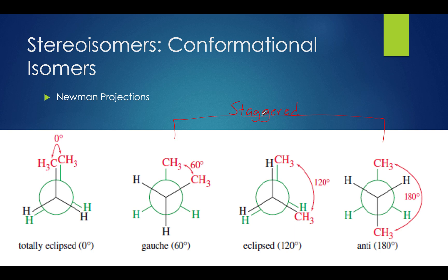Staggered groups are more energetically favored compared to their overlap counterparts, which are called eclipsed. To convert between anti and gauche conformations, the molecule must go through an eclipsed conformation. An eclipsed projection has the functional groups 120 degrees apart on opposite planes. There's another type called totally eclipsed, where there is complete overlap — zero degree distance between the functional groups. This conformation has the highest energy state of the four and is the least energetically favored, because the groups are on the same side and same plane, increasing steric strain.